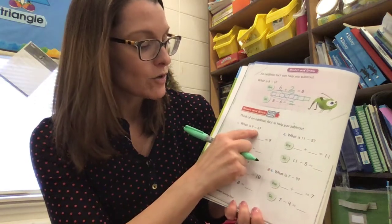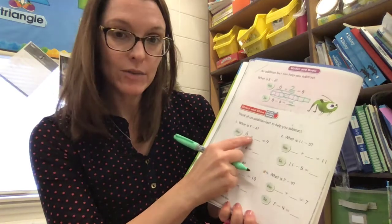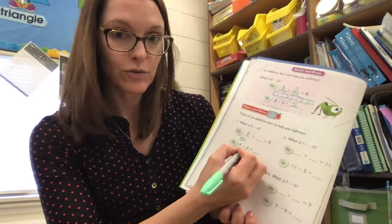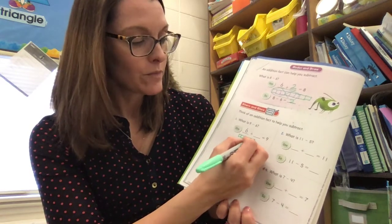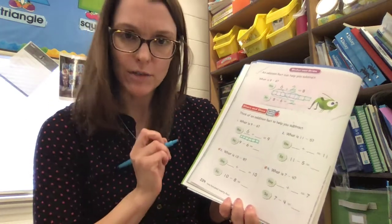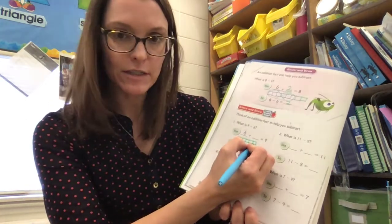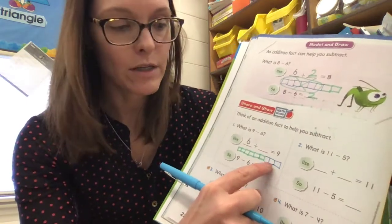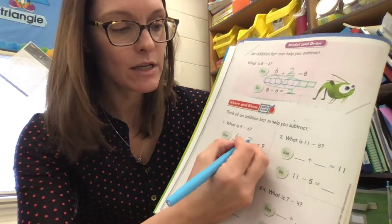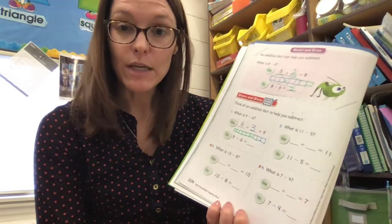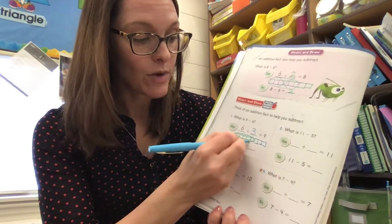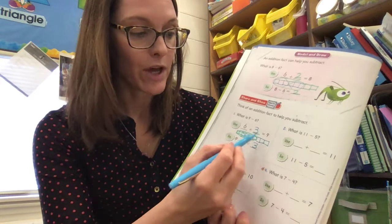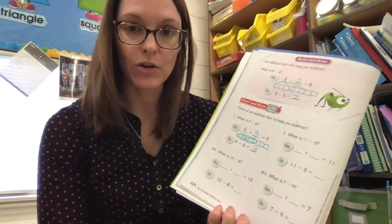Number one: what is nine take away six? Use six plus blank equals nine. We'll start with six cubes — one, two, three, four, five, six — then grab another color and draw more until we have nine: seven, eight, nine. Let's count how many extra cubes I had to draw — one, two, three. So six plus three equals nine, and that means nine take away six equals three. The facts are related — they both have nines, they both have sixes, and they both have threes. They're a related fact.